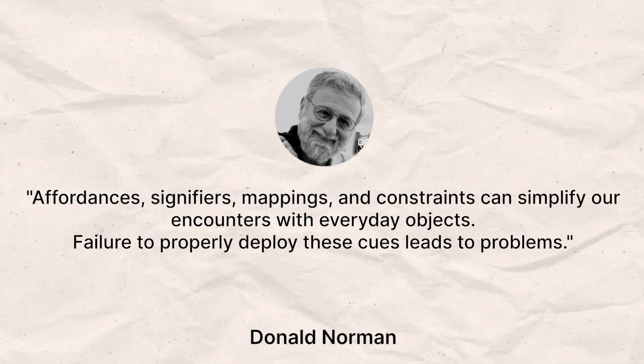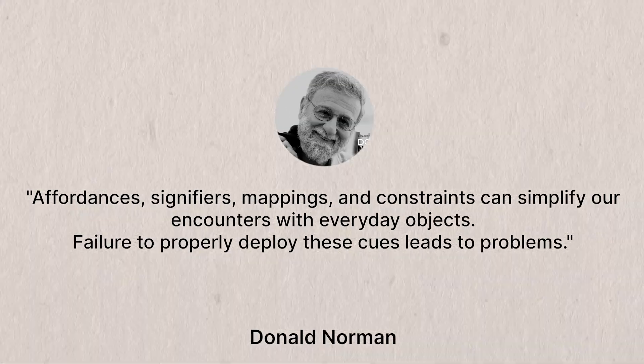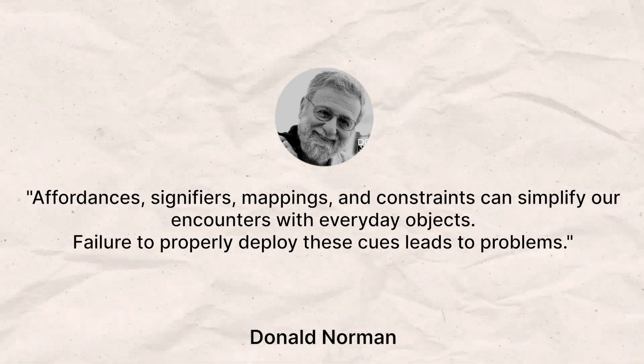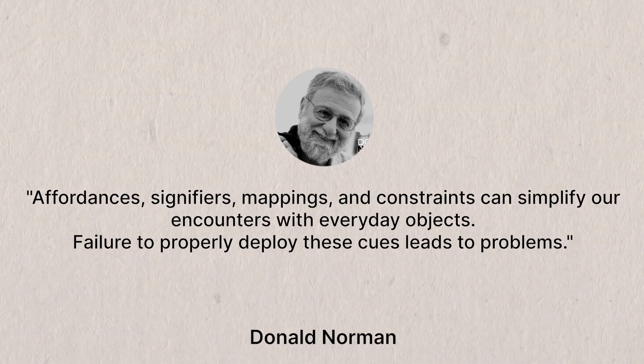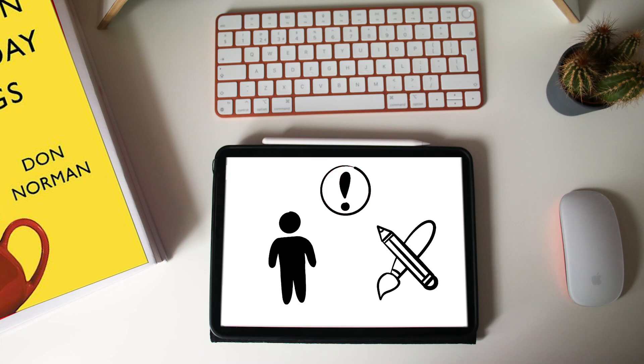A key quote from this section: 'Affordances, signifiers, mapping, and constraints can simplify our encounters with everyday objects. Failure to properly deploy these cues can lead to problems — human error? No, just bad design.' This chapter argues that most errors blamed on humans are actually a result of bad design rather than individual incompetence. Human behavior is influenced by the design of the product or system they are interacting with.